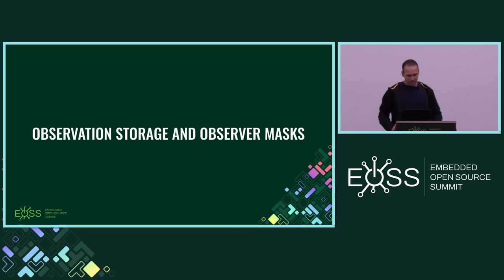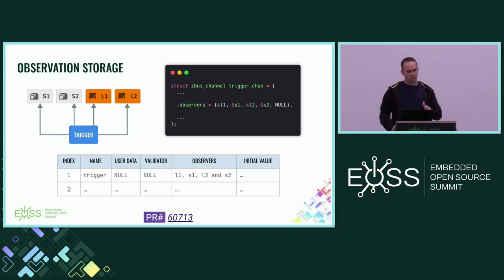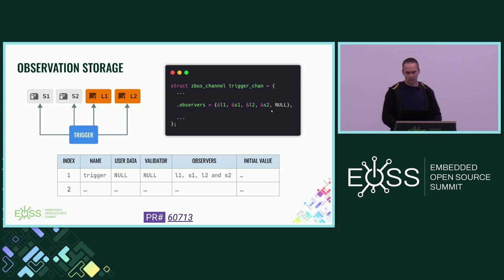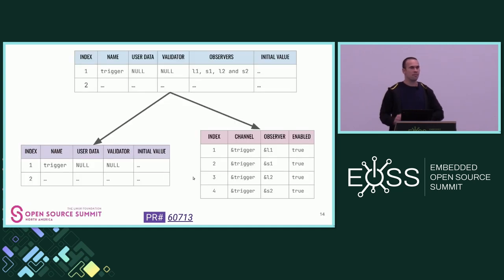Beginning with the observer storage. At the beginning, for example, we have two subscribers and two listeners. During the channel definition, we would have a null-terminated array of observers. If you take the channel struct as a row on a table, we have one value for each column, but for observers we would have a list. It's not a good way to organize data — taking database best practices and normal forms — so I separated them into a different table or struct.